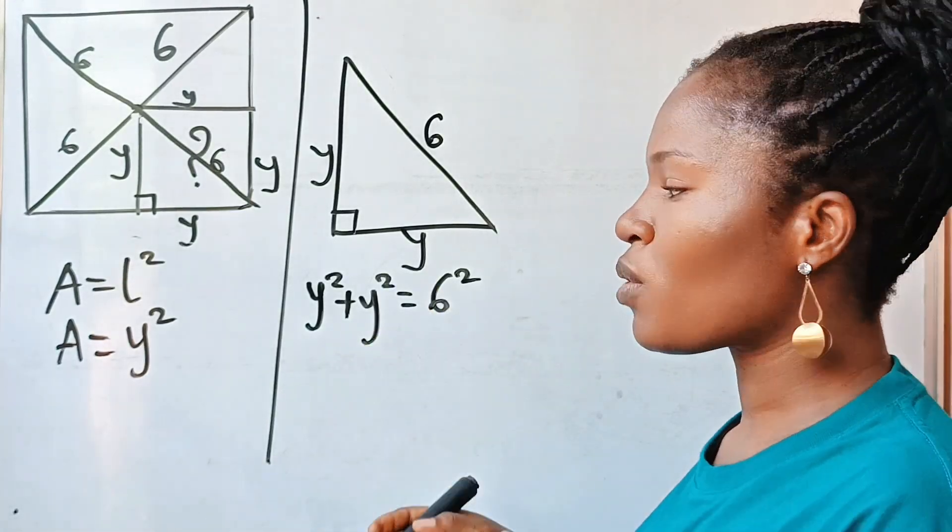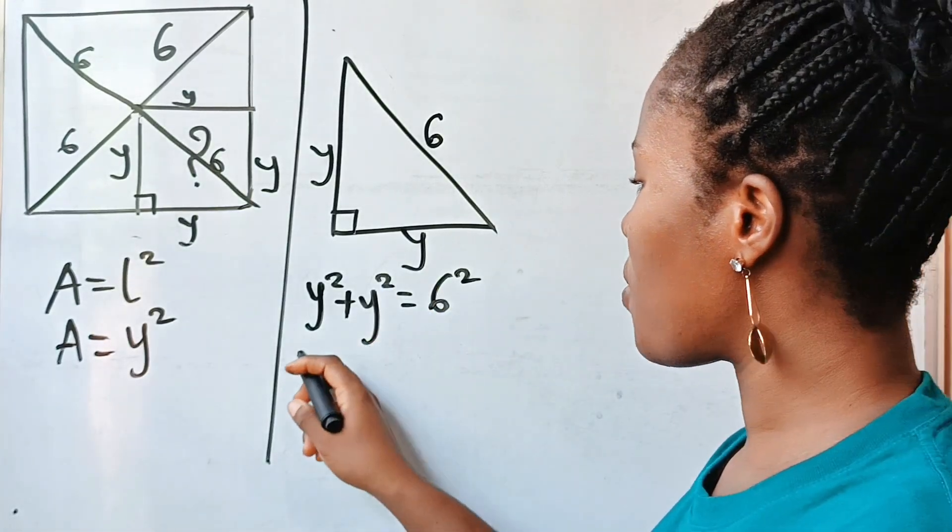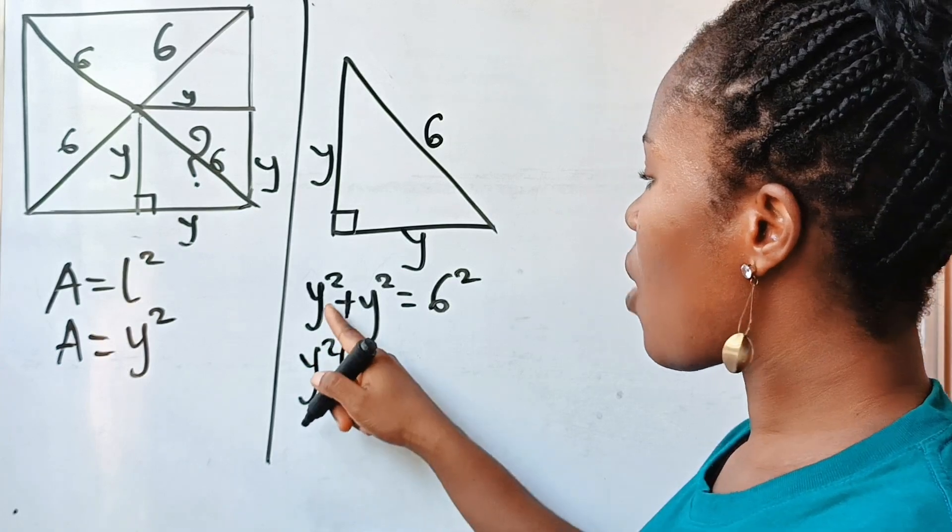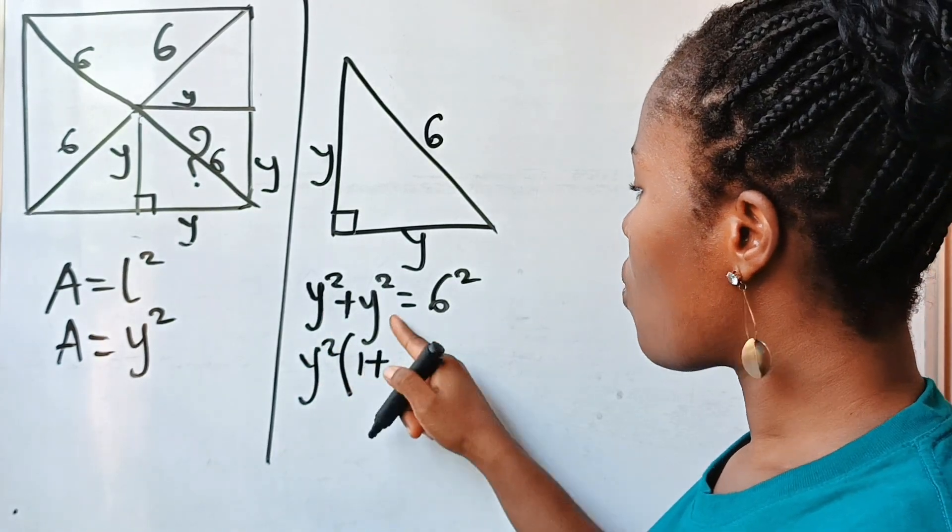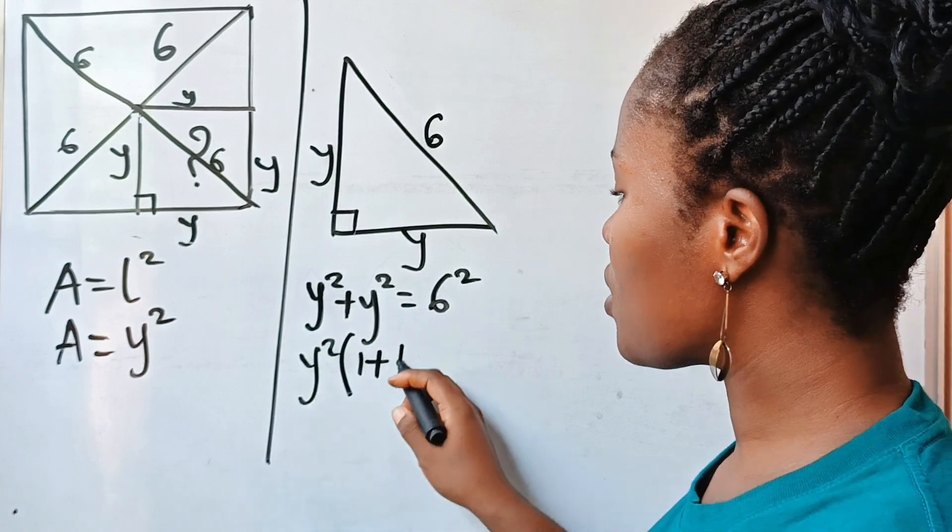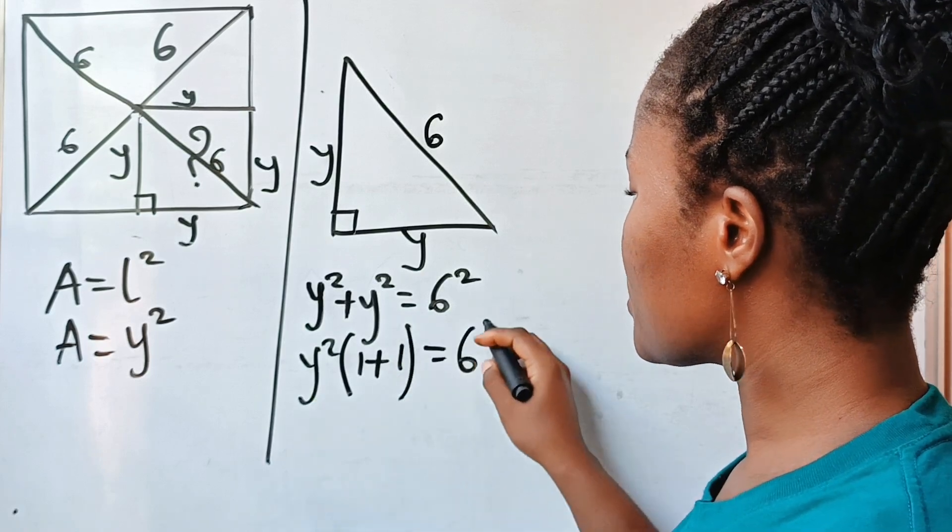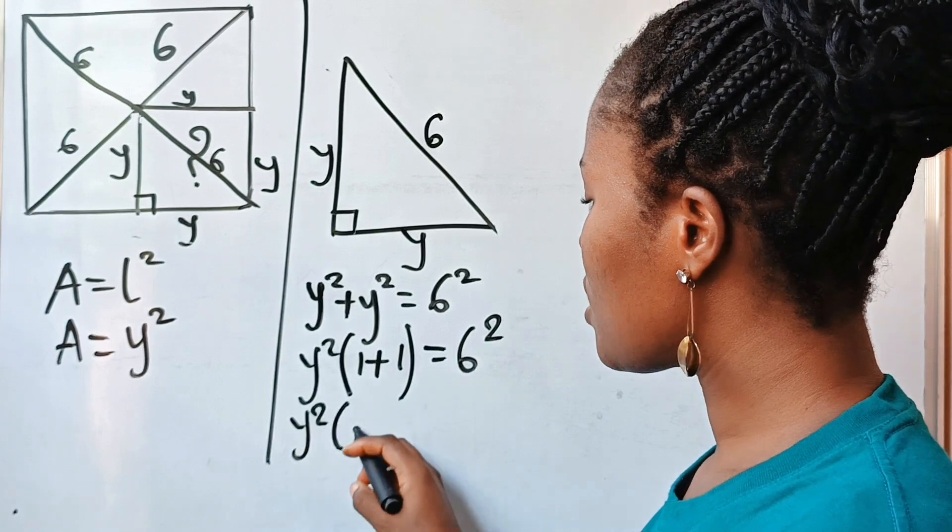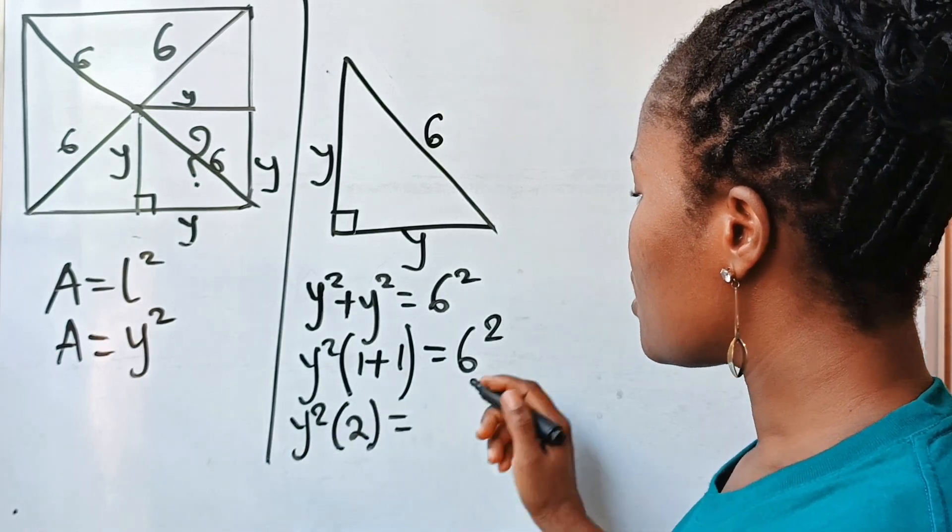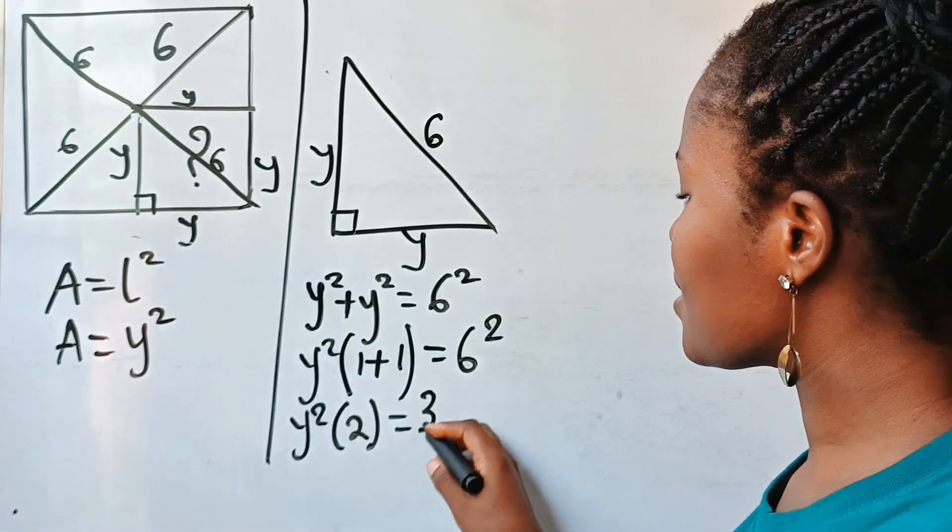Yes. Now y squared plus y squared, what they have in common is y squared. Now when y squared is divided by itself we have one, when y squared is also divided by itself we have one, is equal to six squared. So what we have here is y squared multiplied by two is equal to... now six squared is 36.